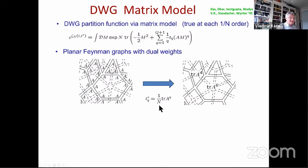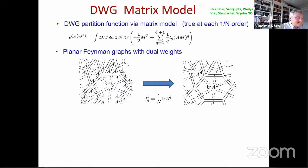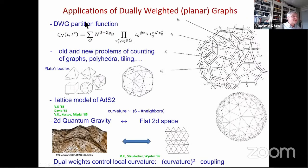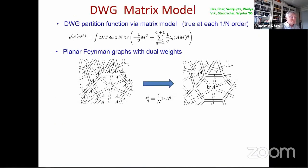In the large-N limit you have a big enough matrix A to parameterize all couplings independently. For finite N they will be dependent, but the good news is that at any order of the 1/N expansion, for any topology, you still parameterize all couplings independently. It is then clear from the Feynman graph expansion that we have the original partition function as the free energy of this matrix model. So we already have the matrix model counting these graphs; now we have to solve it.